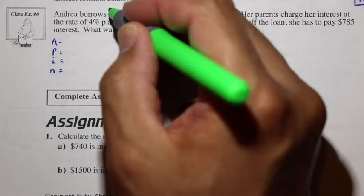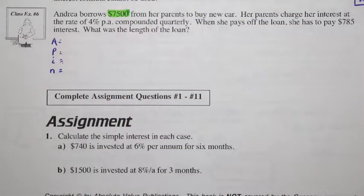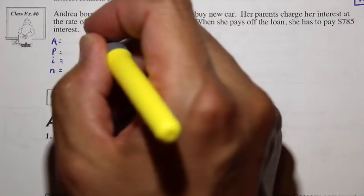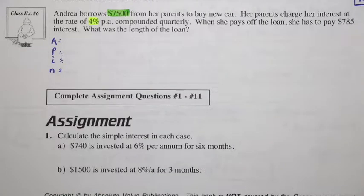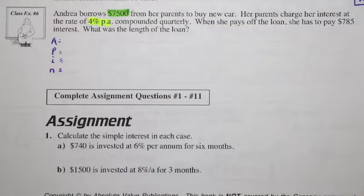So here we have this $7,500. And that looks like our principal. We also have this 4%, which will help us to, and that's per annum. Let me just highlight that too, which will help us to find I.